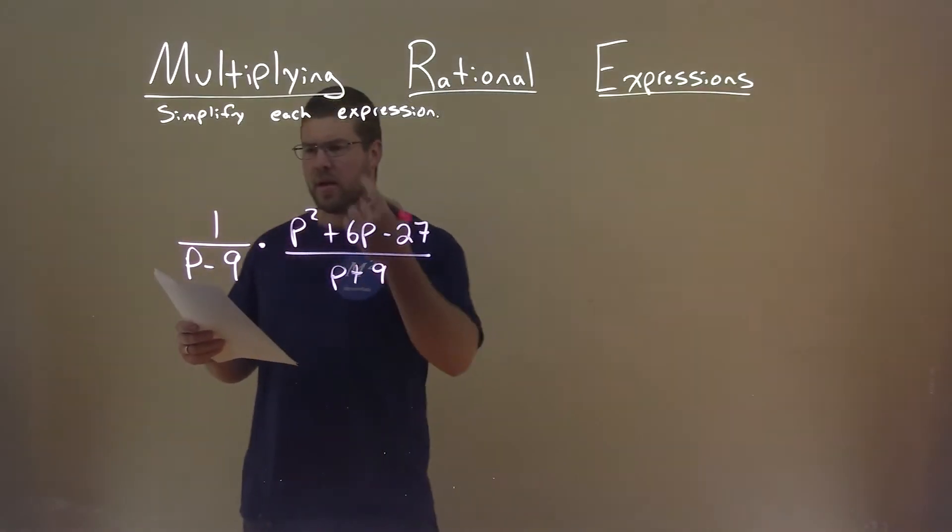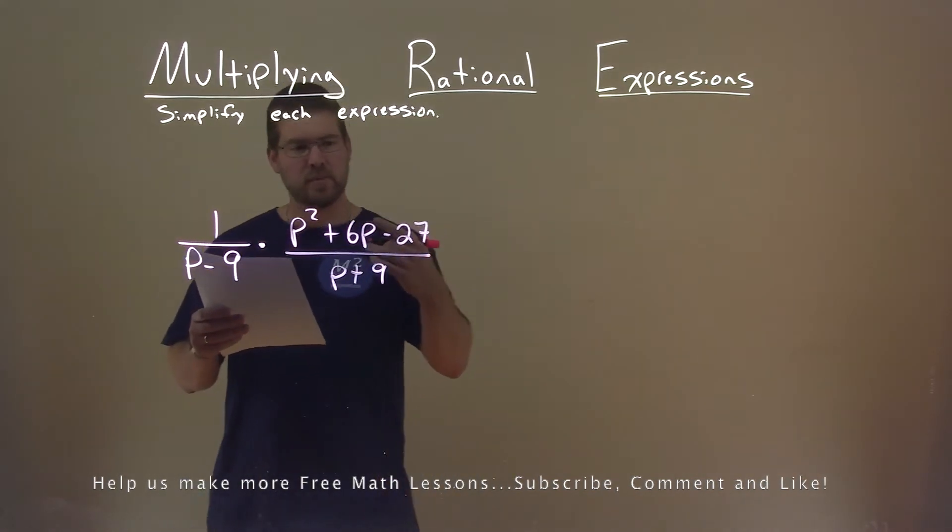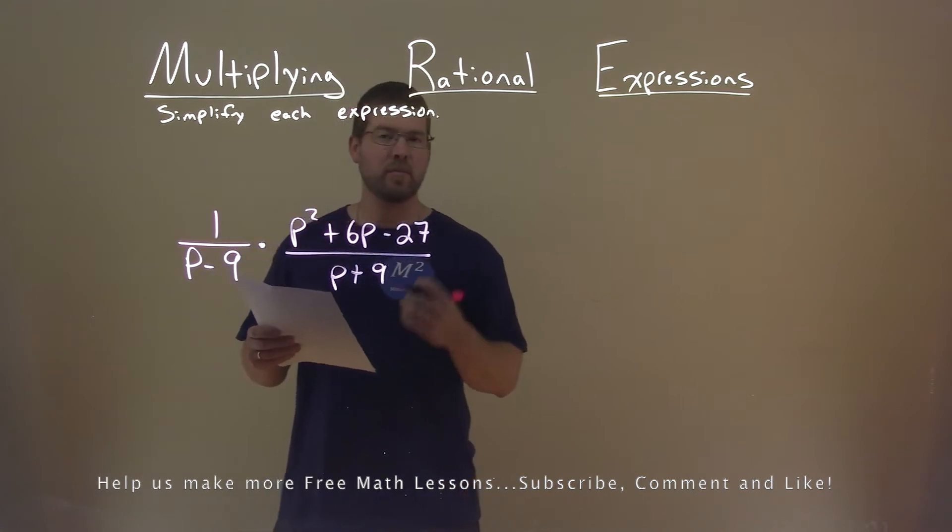We're given this expression right here: 1 divided by p minus 9 times p squared plus 6p minus 27 divided by p plus 9, and we need to simplify this expression.